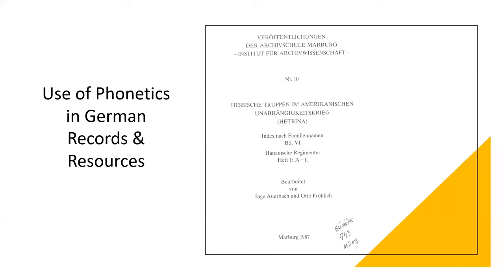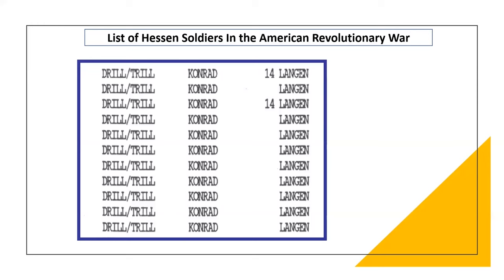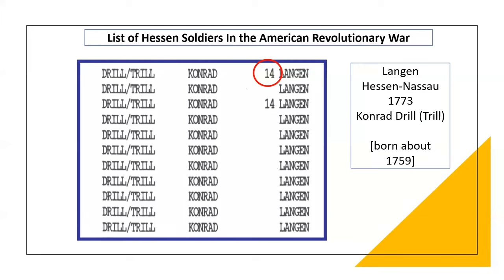The following is an example of phonetics found in German records and resources. This resource was compiled by Inga Auerbach and Otto Fleurlich about the German Hessen mercenary troops that fought for England in the American Revolutionary War. This book is just one of six volumes. This volume lists Conrad Drill or Trill — the D and T are phonetically interchangeable. The record indicated that in 1773, when he joined the military, he was 14 years old. He would have been considered an adult after his church confirmation, which occurred between ages 13 and 17, meaning he would have been born about 1759. His place of birth is given as Langen, which at that time belonged to the landgrave of Hessen-Kassel.